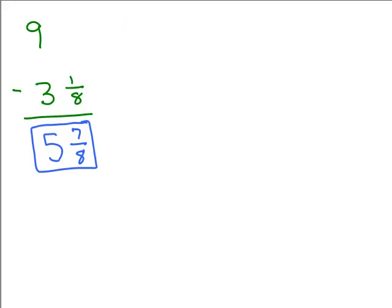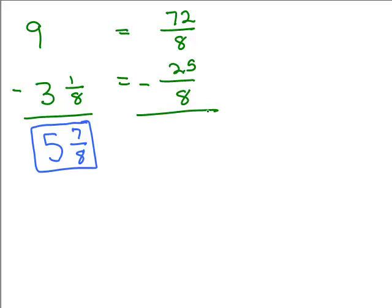Let's do it by changing each to improper fractions. Writing 9 as a fraction with denominator 8: 8 times 9 is 72, giving 72 eighths. For 3 and 1 eighth: 8 times 3 is 24, plus 1 is 25 eighths. Now subtract: 72 minus 25 is 47 eighths. Converting 5 and 7 eighths to an improper fraction gives 47 eighths, and 47 eighths as a mixed number is 5 and 7 eighths — they're the same.